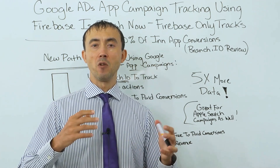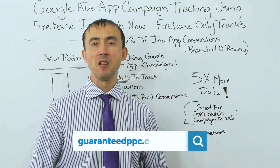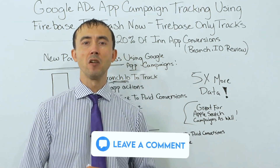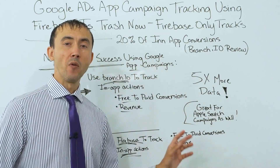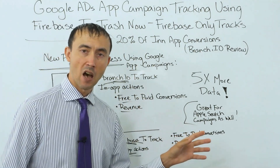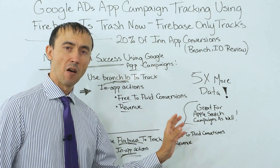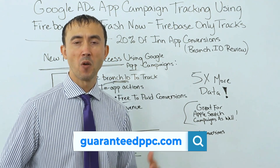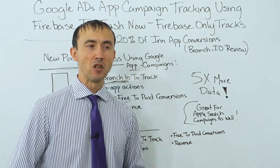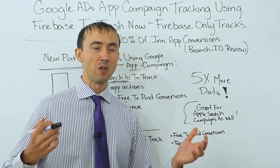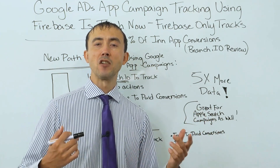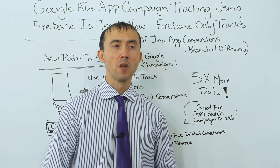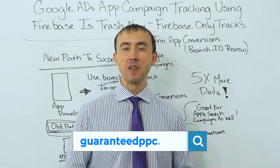If you like the information you've seen on this video, you can also check out my blog at guaranteedppc.com/blog. If you have any questions about anything I covered here, leave me a comment below — I get back to every single person who leaves a question or comment on this channel, usually within 24 hours. Also, if you need somebody to help you set up your branch.io account, or help with your revenue tracking and in-app purchase tracking actions, reach out to me at guaranteedppc.com. We've set this up for other clients before and can certainly help you out, and we offer a guarantee with our services — we do not charge management fees until we get you a certain minimum lift in profitability in excess of what we charge.